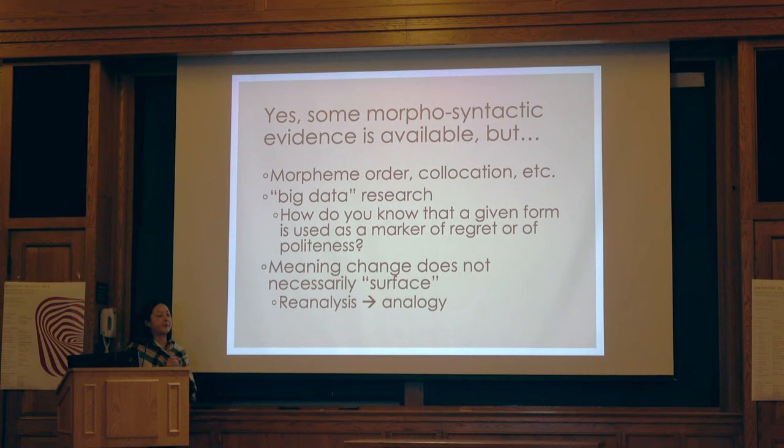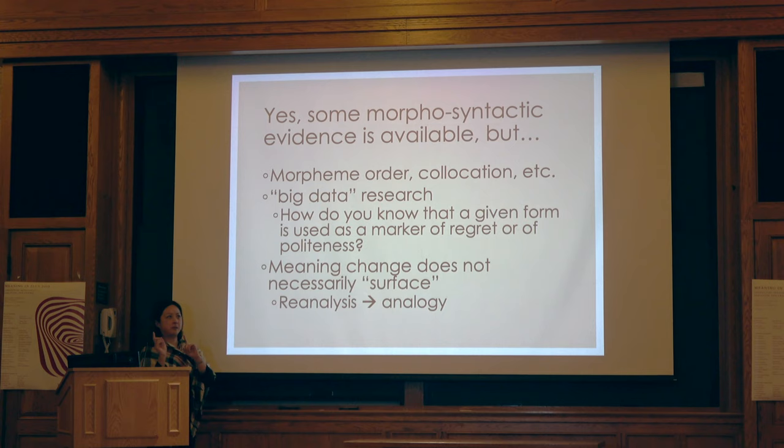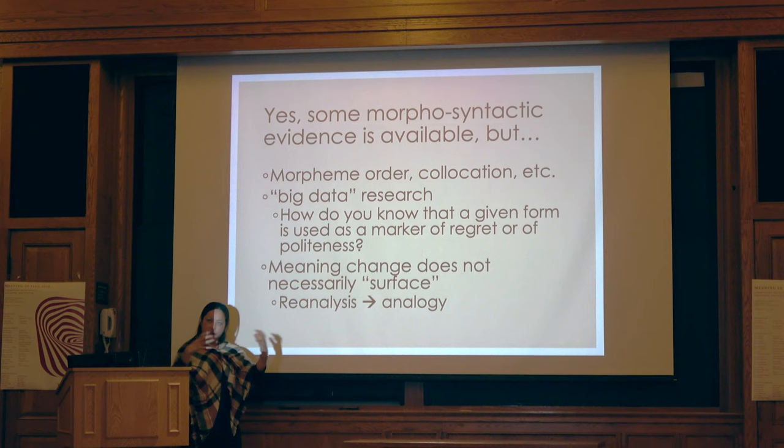There are many studies out there that show some more syntactic evidence, like corpus-based studies. For example, the Japanese auxiliary shimau tends to go toward the right periphery toward the outside. The scope increases, and so on — you can see the symptoms of functional change.